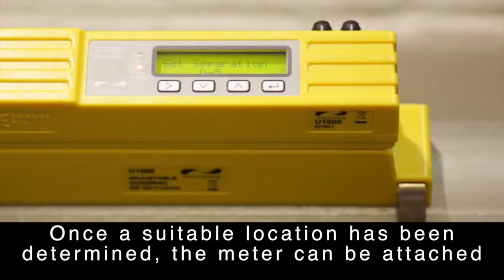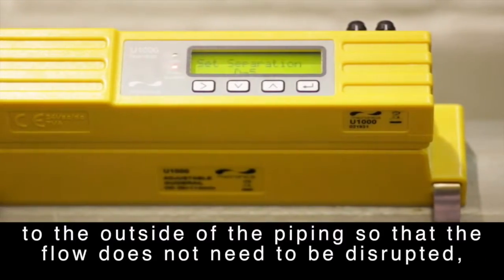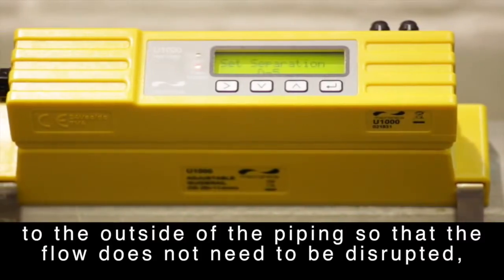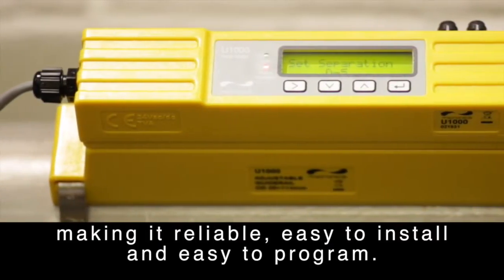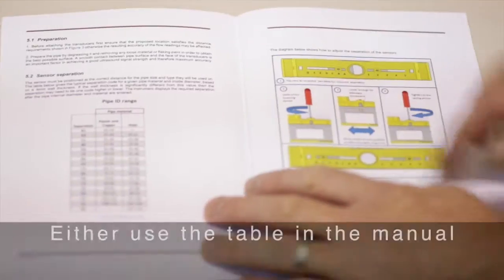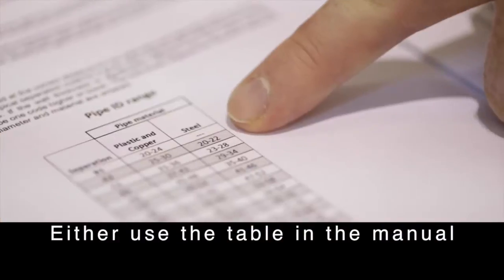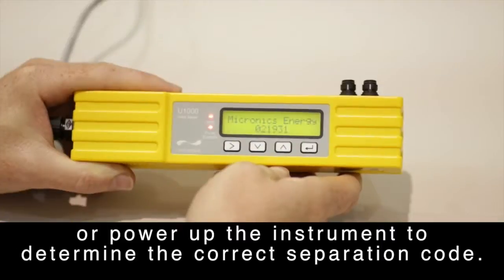Once a suitable location has been determined, the meter can be attached to the outside of the piping, so that the flow does not need to be disrupted, making it reliable, easy to install and easy to program. Either use the table in the manual or power up the instrument to determine the correct separation code.